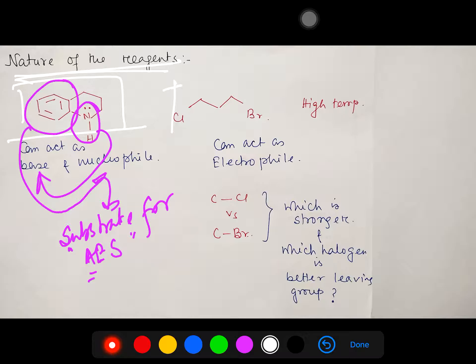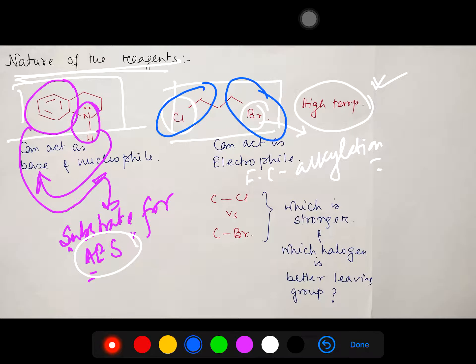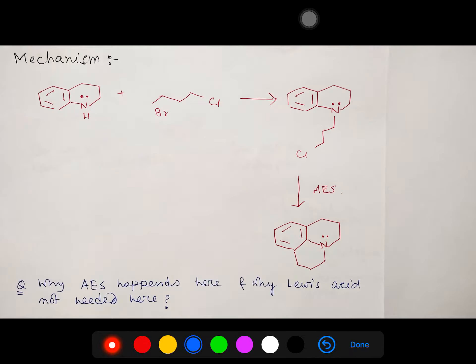This reagent is a 1,3-dihalo compound — on one side there is bromine and on the other side there is chlorine. It can act as a leaving group — bromine or chlorine — and it can participate in a Friedel-Crafts alkylation reaction. Also, note that high temperature is given, so consider what reactivity properties we can have under this high temperature. You must be careful about the stability and reactivity of the bond: which is more stable, carbon-chlorine or carbon-bromine, and which is the better leaving group.